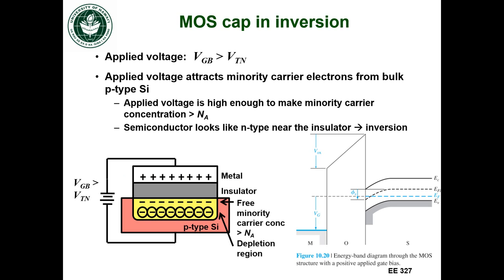And I'm not only pushing away all those holes, but I'm starting to attract free electrons that were in the p-type semiconductor. Remember, although it's p-type, there are still some electrons there — it's just much, much less than the amount of holes.